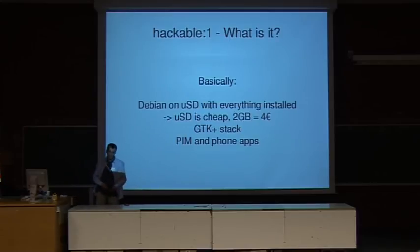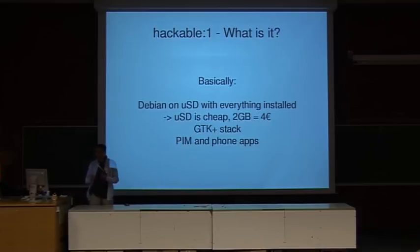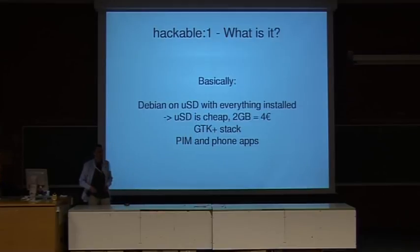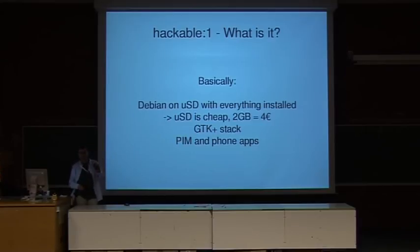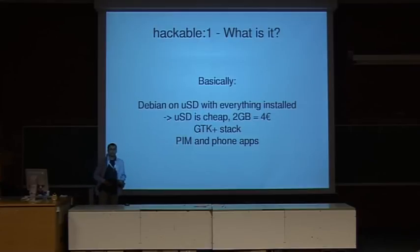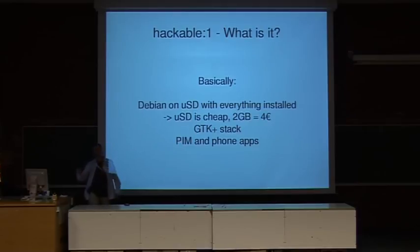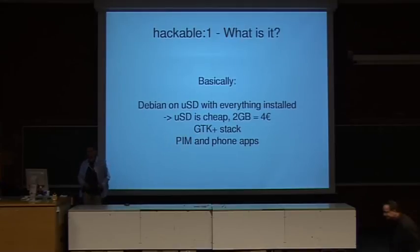The project is called Hackable:1, and basically it is Debian on a micro SD card with everything already installed. We're all used to fast installs on desktops, but on embedded platforms things are slow. So we put all the libraries on the micro SD card — we simply use the 2GB of space available. When you start development, you won't be missing headers or libraries; everything is there, just go and start developing.